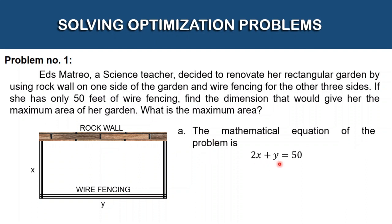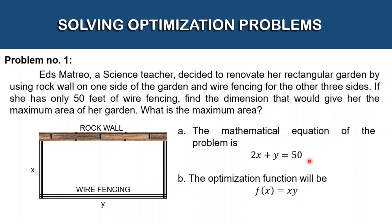For letter (a), the mathematical equation of the problem is 2x + y = 50. We get this because 50 is the total wire fencing. We have 2x for the two sides, plus one y — because the other y is the rock wall. So 2x + y = 50.